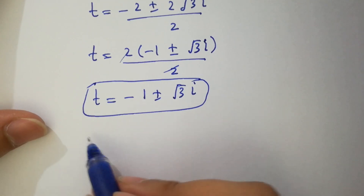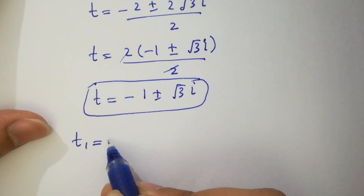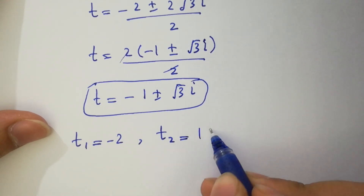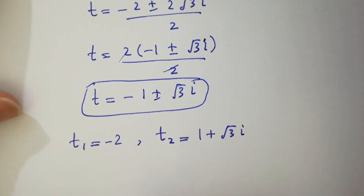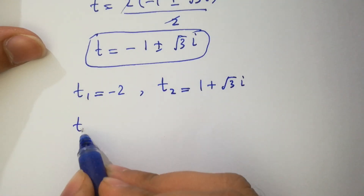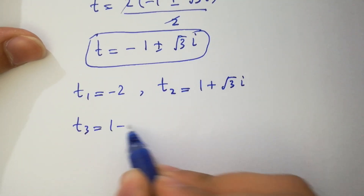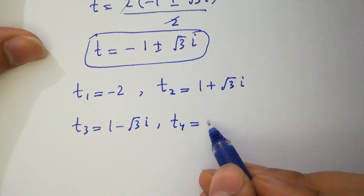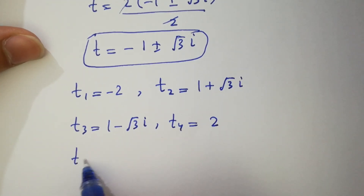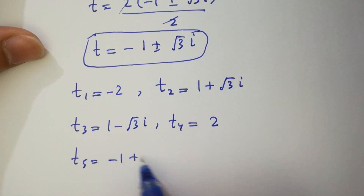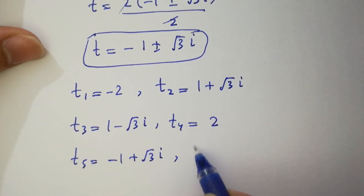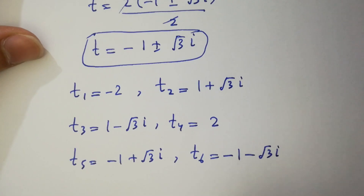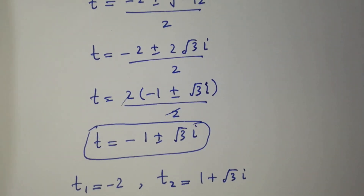So finally we have six solutions: t1 equals minus 2, t2 equals 1 plus square root of 3 i, t3 equals 1 minus square root of 3 i, t4 equals 2, t5 equals minus 1 plus square root of 3 i, and t6 equals minus 1 minus square root of 3 i. Thanks for watching this video, please subscribe to this channel to get notifications of my new videos.